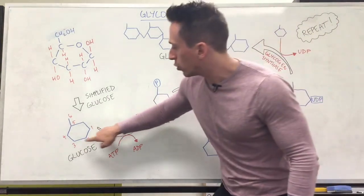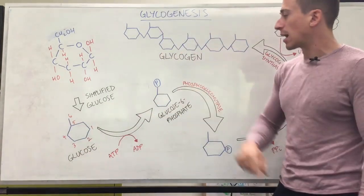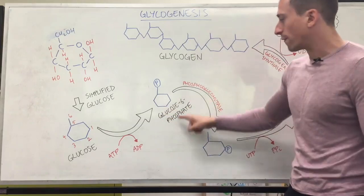Now, which carbon is that? One, two, three, four, five, six. It's on the sixth carbon, so it's called glucose-6-phosphate.